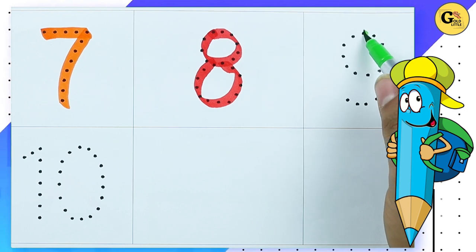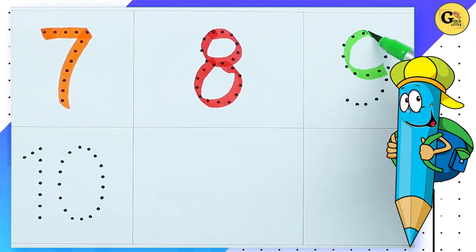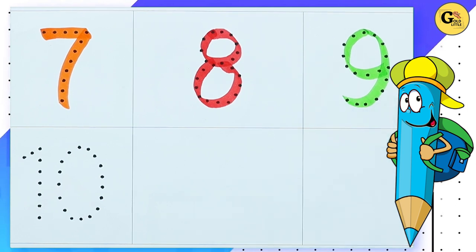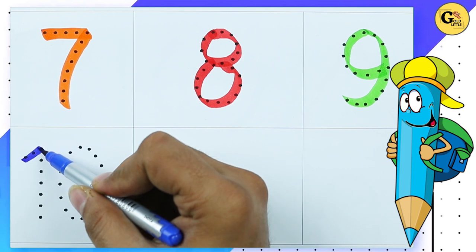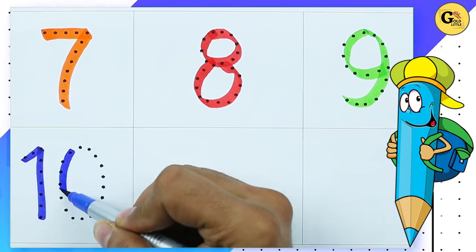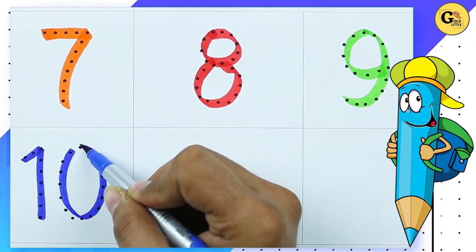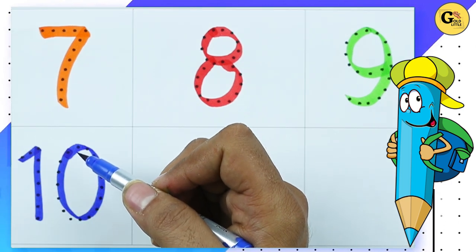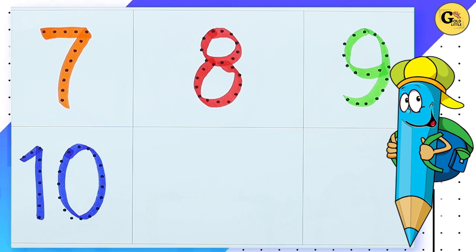Number nine with green color. It's number ten — one and zero — with blue color. Thank you for watching! Please subscribe and goodbye!